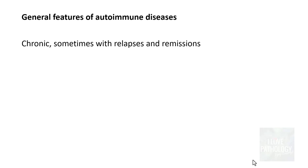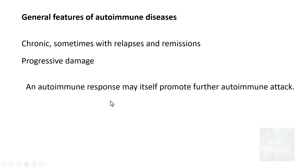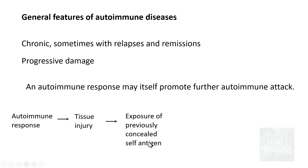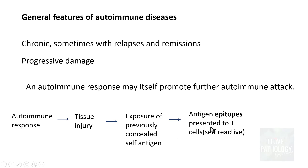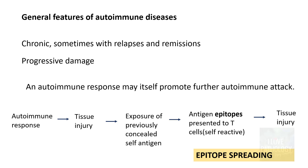Now let's look at some general features of autoimmune diseases. First, all autoimmune diseases are chronic, and sometimes there can be relapses and remissions. The damage is progressive because the autoimmune response may itself promote further autoimmune attack. Tissue injury exposes previously hidden antigens, whose epitopes are presented to self-reactive T cells, leading to more tissue injury — a process called epitope spreading, which accounts for the chronicity of autoimmune diseases.